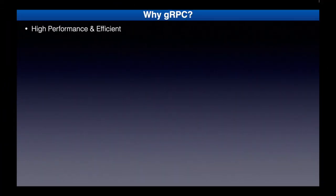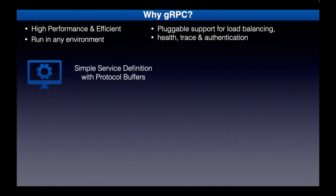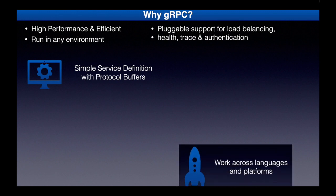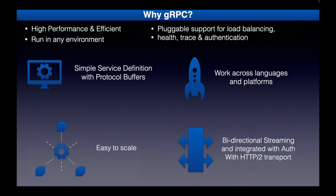Why use gRPC? Because of its high performance and efficient way of developing microservices. Applications developed using gRPC can run on any environment, and it has pluggable support for load balancing, health checking, tracing, and authentication. It offers simple service definition with protocol buffers — a powerful binary serialization toolset and language. It works across languages and platforms; you can generate client and server stubs for your service in a variety of languages. It is easy to scale — install runtime and dev environments with a single line and scale to millions of RPCs per second. It also features bi-directional streaming fully integrated with pluggable authentication, using HTTP/2-based transport.